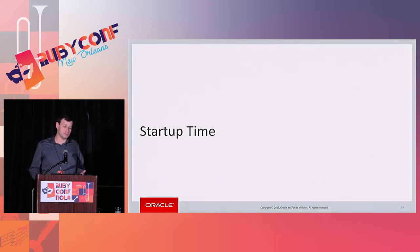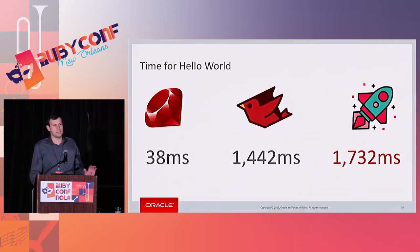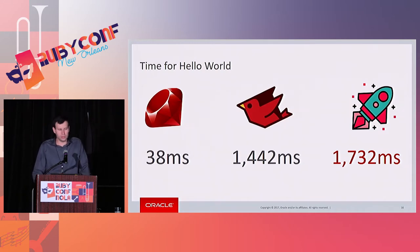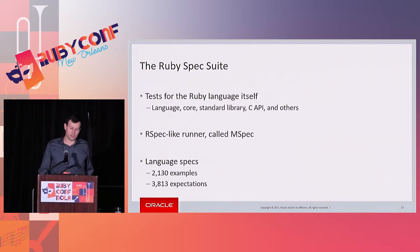TruffleRuby is optimized for long-lived applications and hasn't spent much time optimizing for short-lived ones. To improve startup time, it helps to see the current status. I ran a simple Hello World application. MRI is hands-down the fastest at about 38 milliseconds. JRuby runs it in 1.4 seconds. TruffleRuby lags behind at 1.7 seconds.